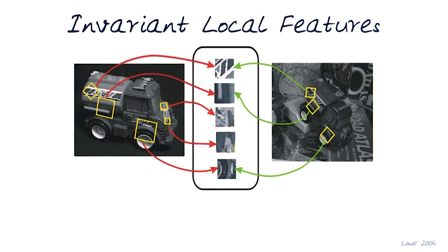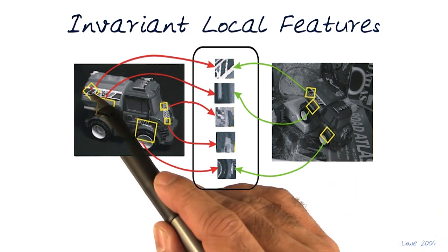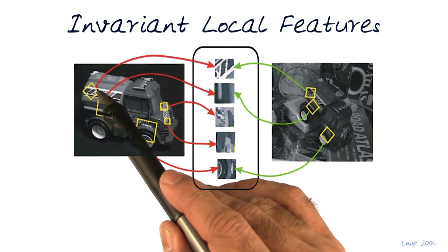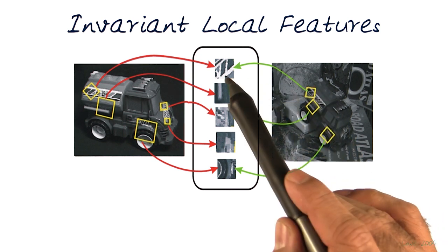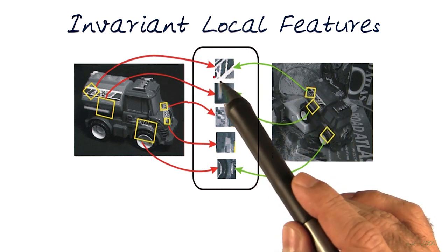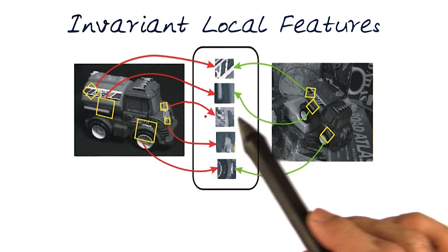Here's an example of invariant local features. Here are two examples of the same car. For example, this region here is matched to this region here. It's the same car, but we notice this patch is exactly the same, even with orientations. And it finds other regions similar.